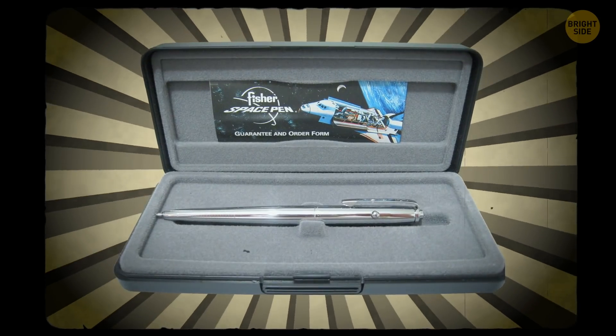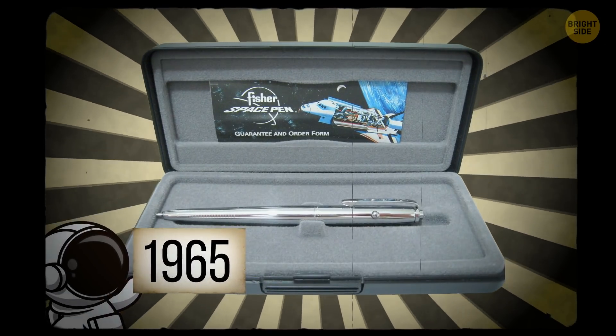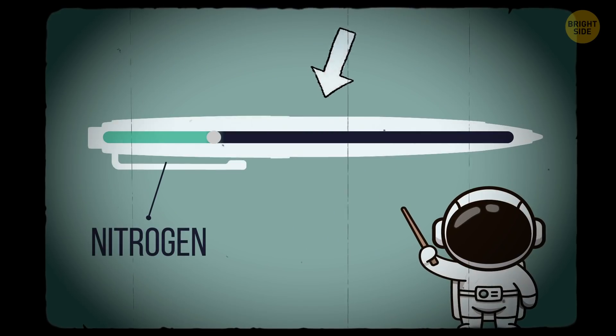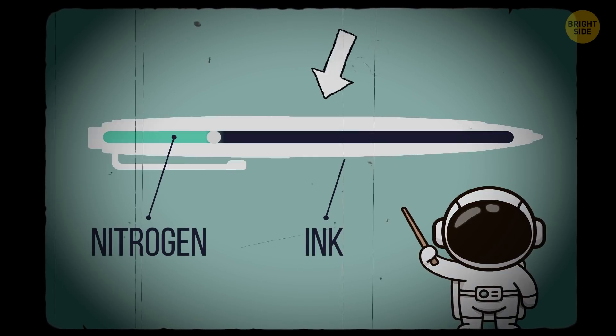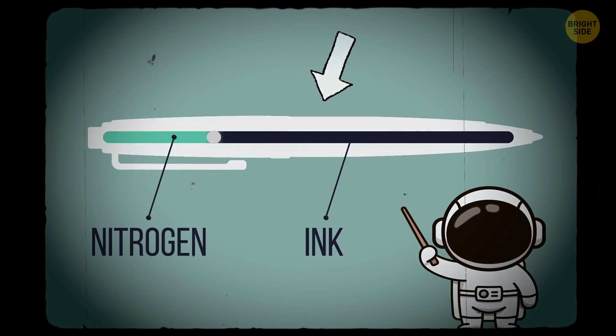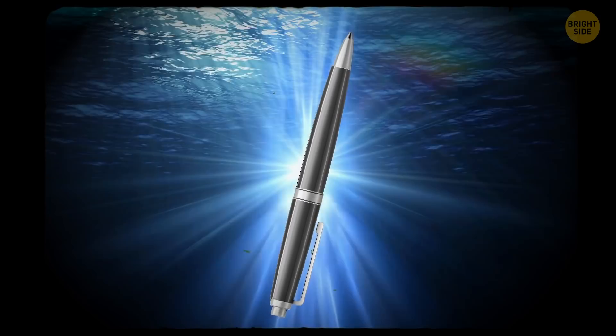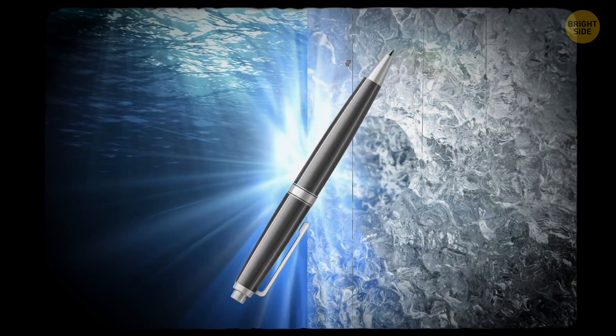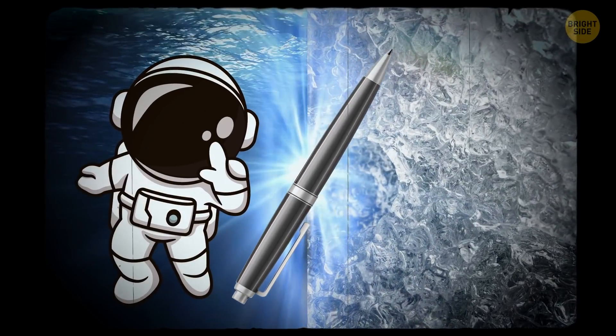A space pen was introduced long before, in 1965. It had a cartridge pressurized with nitrogen, so the ink there is pressurized toward the tip. This pen can be used literally anywhere, underwater, in extreme sub-zero temperatures, and even during an exam.